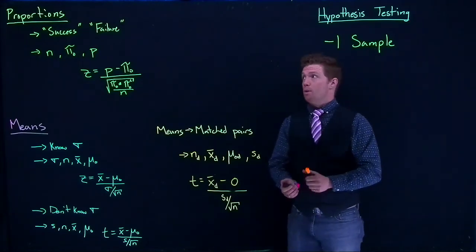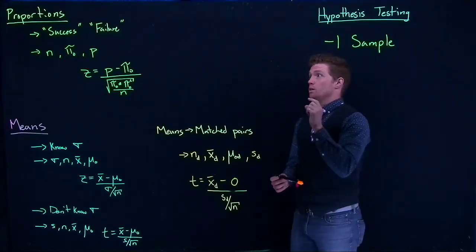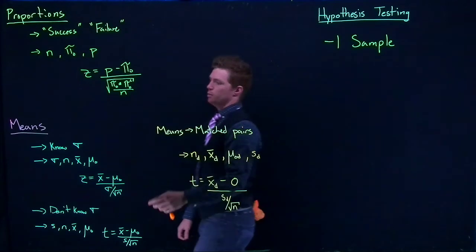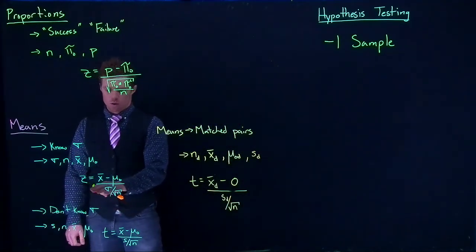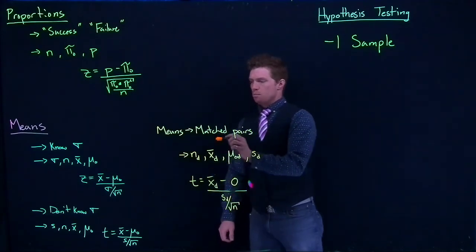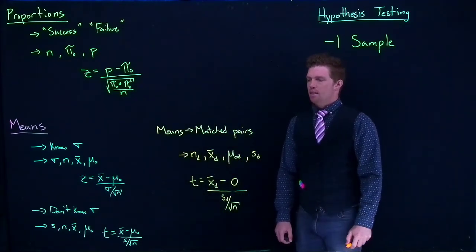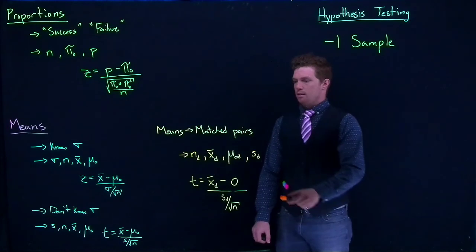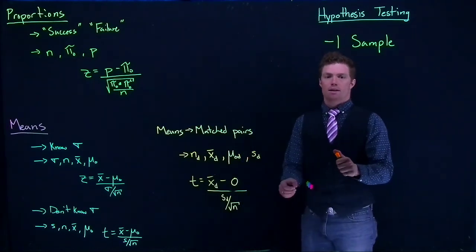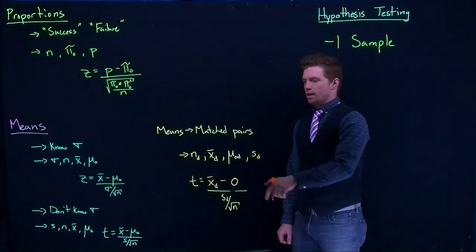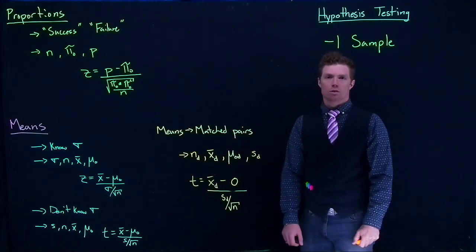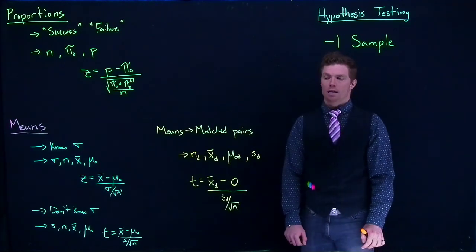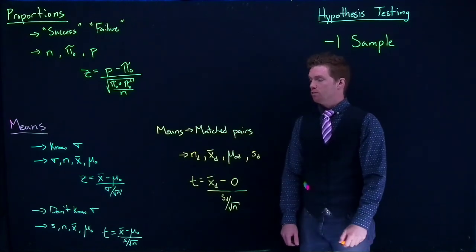So in our one sample hypothesis testing, there are kind of these four options. We have one when we're dealing with categorical data, when we're looking at our proportions. We have two classical means where one where we know what the standard deviation is, and one where we don't know what the standard deviation is. Most of the time we're using that bottom one where we don't know what the standard deviation is. And then the last one that we have is the means with matched pairs. And this is where we're doing a direct comparison between two linked things, and then looking at the average difference between those linked things. And we'll do examples of all these, especially in our software, to show how we can do our hypothesis testing and how each of these actually work out.